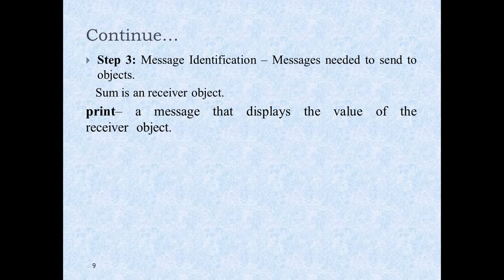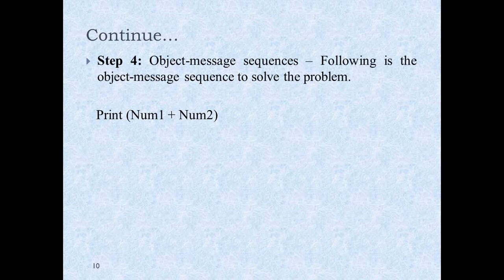Message identification: the sum is a receiver object, and the message is to print and display the value of the receiver object. The last step is the object message sequence — if you have a sequential message, what will it do?